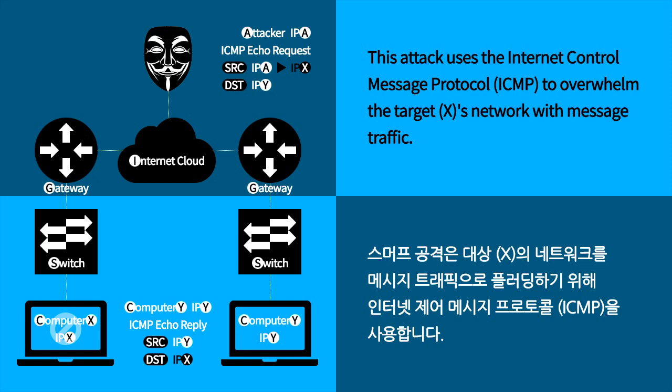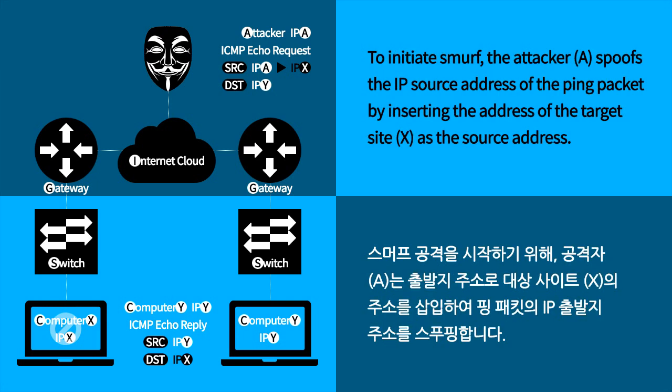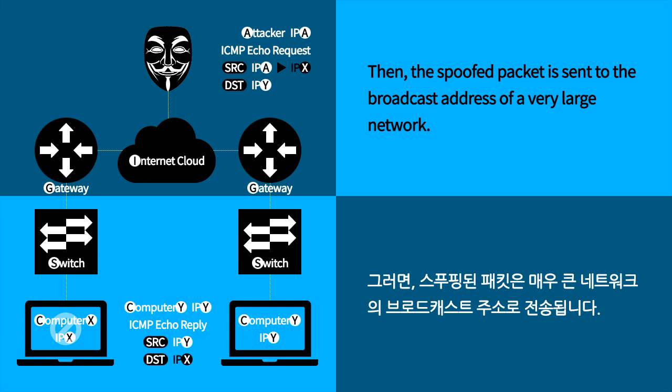This attack uses the Internet Control Message Protocol (ICMP) to overwhelm the target X's network with message traffic. To initiate a smurf attack, the attacker spoofs the IP source address of the ping packet by inserting the address of the target site X as the source address. The spoofed packet is then sent to the broadcast address of a very large network.